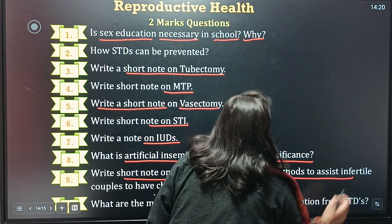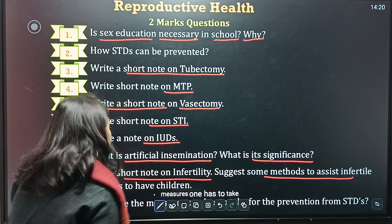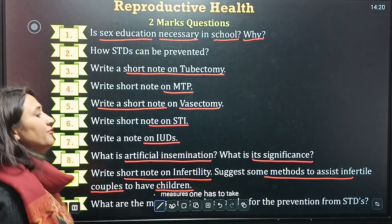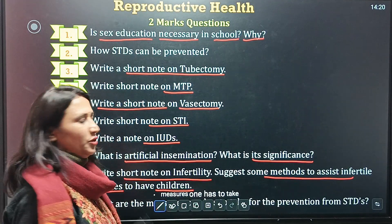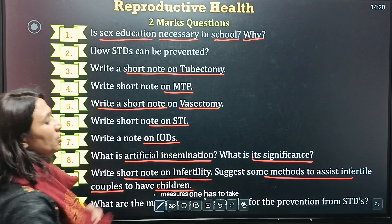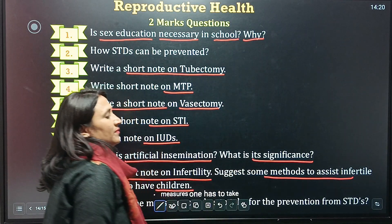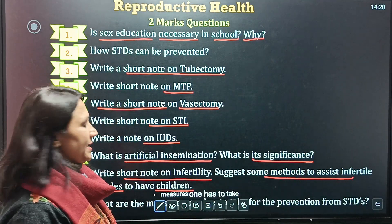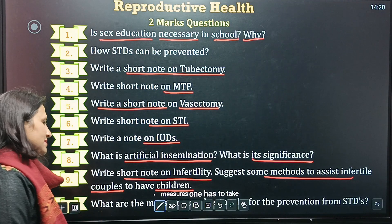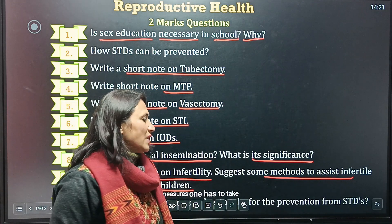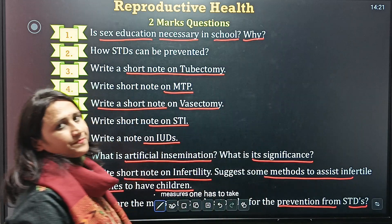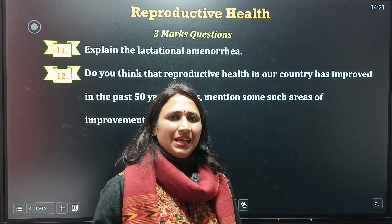Next question: write a short note on infertility and suggest some methods that assist infertile couples to have children — here we talk about ART, assisted reproductive techniques. Tenth question: what are the measures one has to take for prevention of STDs?